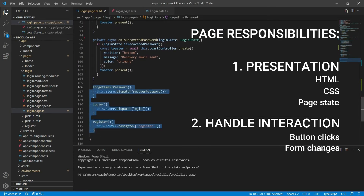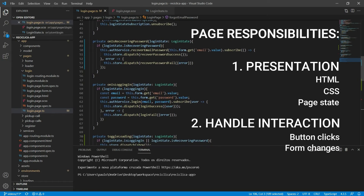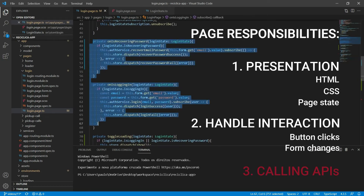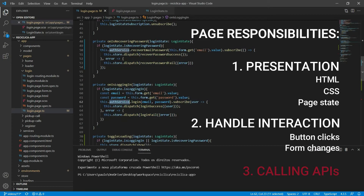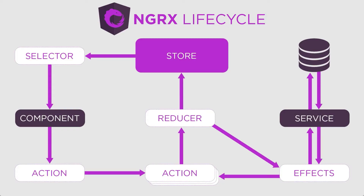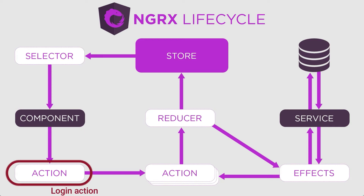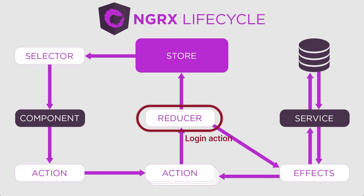But we can see that our login page component is also responsible for accessing external resources by making calls to the auth service. Here's how our app is working now: we have our component which is the login page, and when the user clicks on the login button, we tell the store to dispatch the login action. This login action is captured by the reducer, which knows how to handle it.